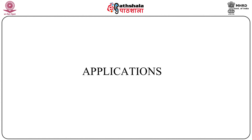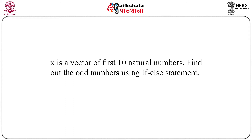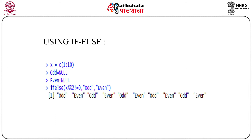Here comes an application of what we have learnt. Consider this problem: suppose x is a vector of the first 10 natural numbers, and our objective is to find the odd numbers using the if-else statement. We know that among 1 to 10, there are 5 odd and 5 even numbers. Let's see how R finds them using the if-else statement. Once we can solve easy problems like this, we can master tackling even trickier problems.